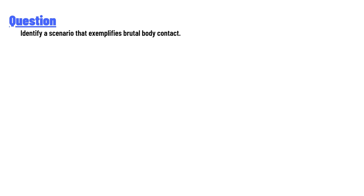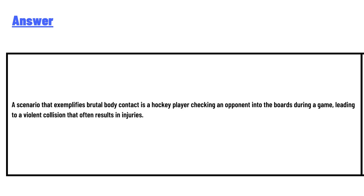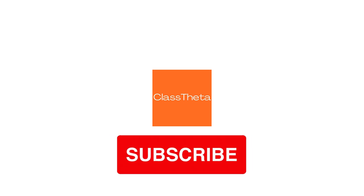Identify a second area that implies brutal body contact. The answer is: a second area that implies brutal body contact is a hockey player checking an opponent into the boards during a game, leading to a violent collision that often results in injuries. This is our correct answer for the question.